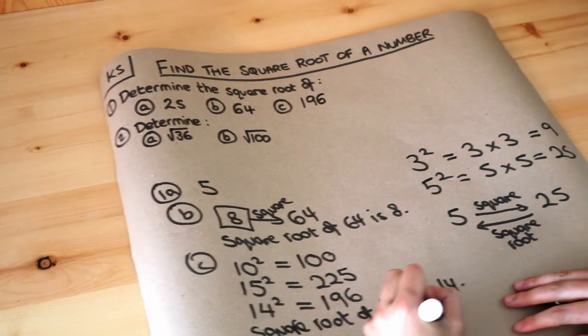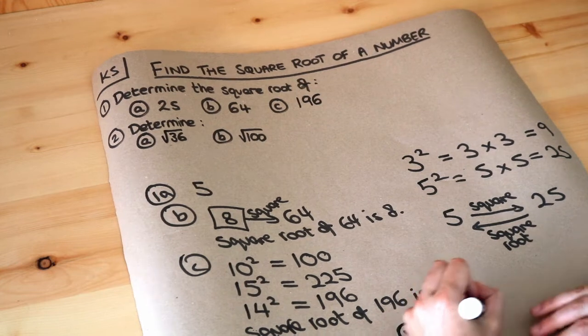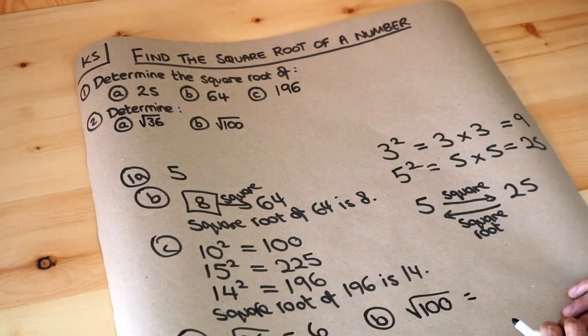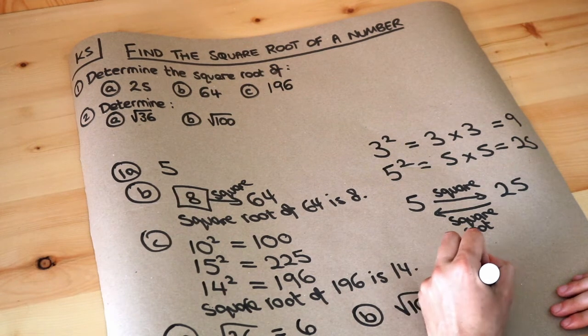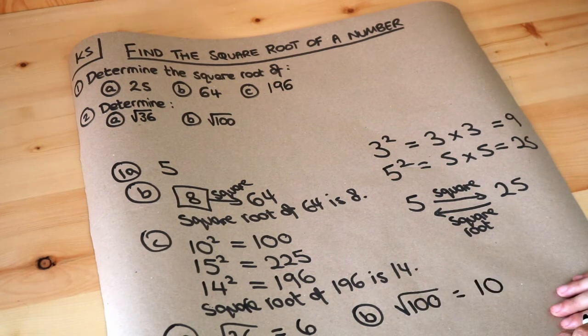And finally, the square root of 100, what number multiplied by itself gives you 100? Well 10 times 10, 10 times itself gives you 100, so the answer is 10. The square root of 100 is 10.